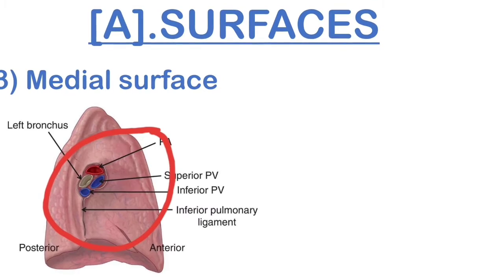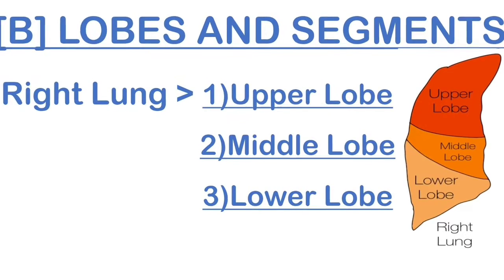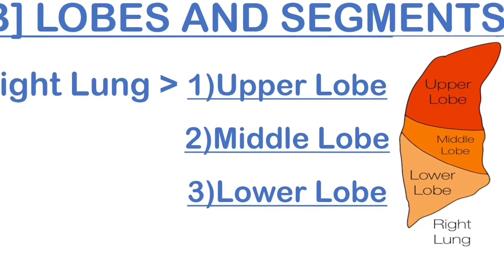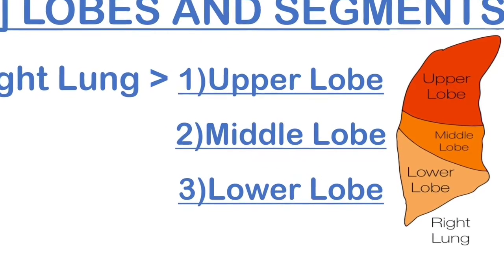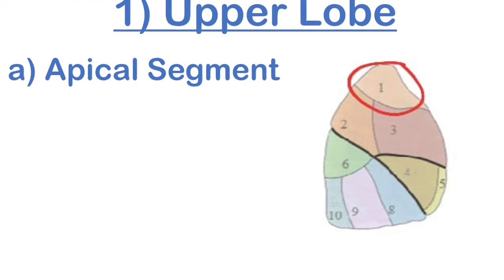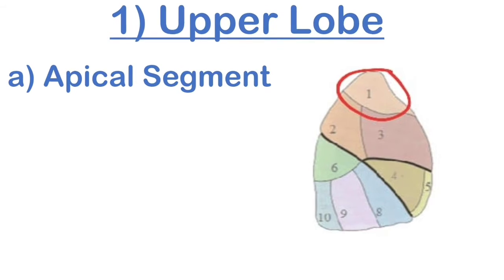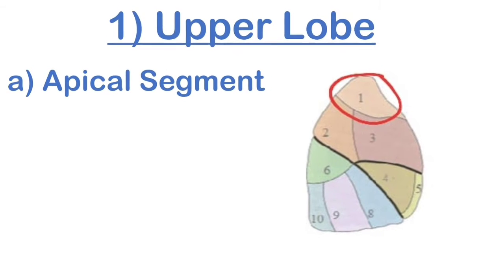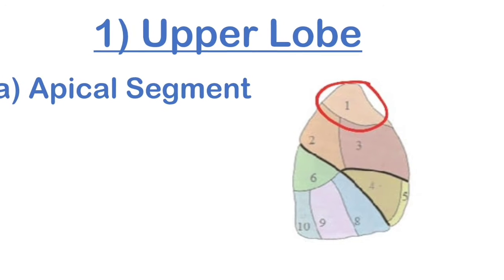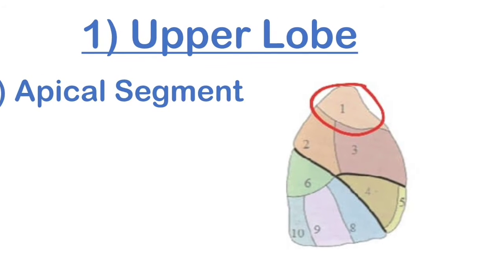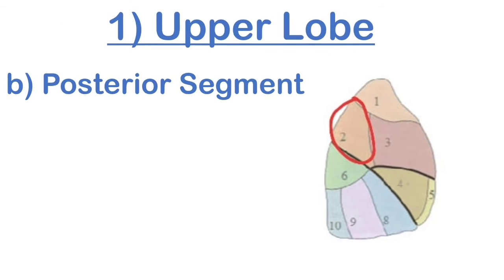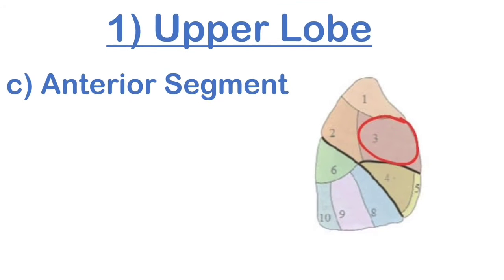Let's talk about the lobes and segments. There are two lungs — right and left. In the right lung there are three lobes: the upper, middle, and lower lobe. This picture shows the anterior portion of the lungs, where we can see the apical segment at the top, underlined by the red marker. You can easily see the apical segment in this anterior portion, and also the posterior segment of the upper lobe.